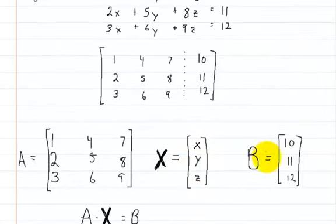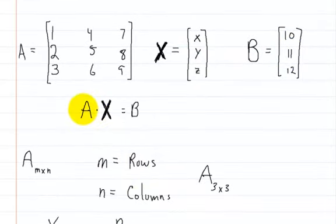You'll see the constants as B. In textbooks you'll see matrix A times matrix X equals matrix B. That's how they're written.